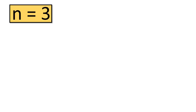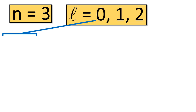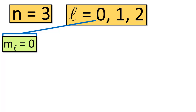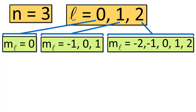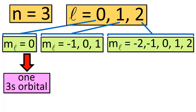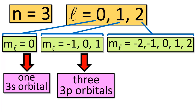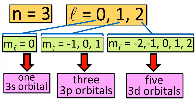Let's take it one step further. If n = 3, then l can be 0, 1, or 2. Where l = 0, m sub l can only be 0. Where l = 1, m sub l can be −1, 0, or 1. Where l = 2, m sub l can be −2, −1, 0, 1, or 2. So where l = 0, we've got one 3s orbital; where l = 1, three 3p orbitals; and where l = 2, five 3d orbitals. The number of orbitals comes from the number of possible values of the magnetic quantum number m sub l.